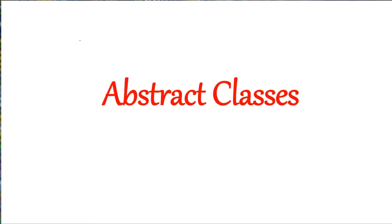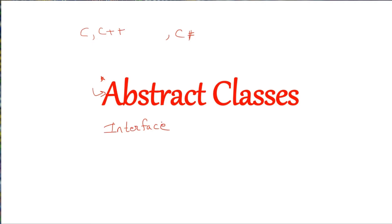In this session we have to see some advanced concepts of Java that are not available in other languages like C and C++. These concepts are available in advanced languages also, for example C#, but these concepts were introduced only by Java. One of the concepts is abstract class, and another we will be seeing is interfaces in Java. These two are related to inheritance and polymorphism.